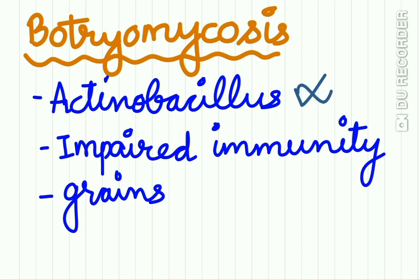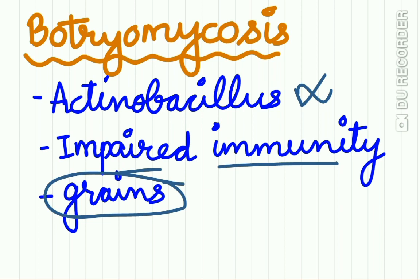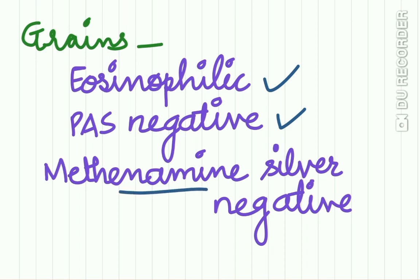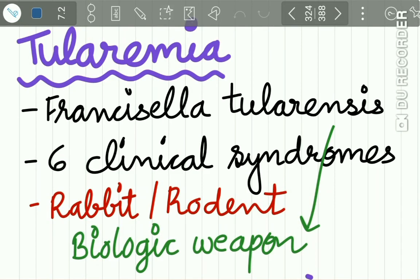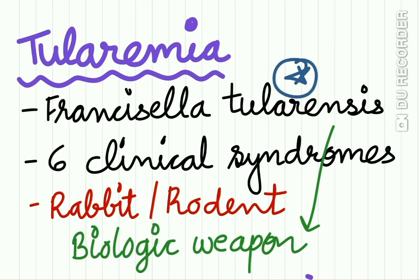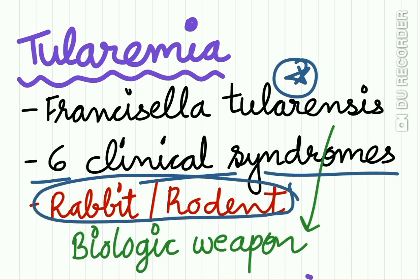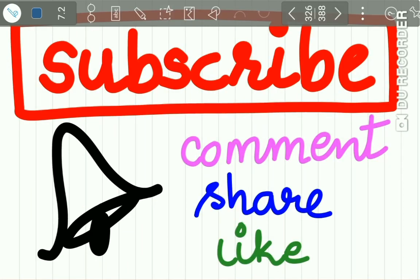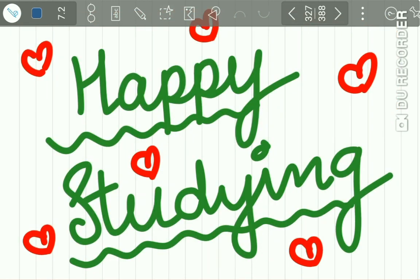To summarize: for botryomycosis, the most commonly associated organism is actinobacillus; it occurs in patients with impaired immunity; and the grains in histological sections are eosinophilic, PAS-negative, and methenamine silver-negative. For tularemia, remember the etiological organism Francisella tularensis used as a biologic weapon, the six clinical syndromes, and the source of infection being rabbits or rodents. Next lecture we will study melioidosis and tetanus. Please subscribe to our channel — happy studying!